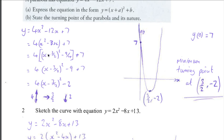We are then going to multiply the square bracket by 4. Remember the 7 is not in the square bracket. We multiply that by 4. We are then going to tidy up, so we have 4(x - 3/2) squared minus 9 plus 7, which will be 4(x - 3/2) squared minus 2. Part b: state the turning point of the parabola and its nature.